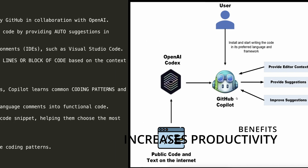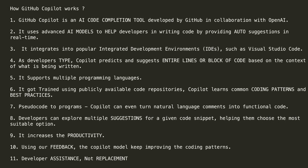These are important points. GitHub Copilot has some key points. It is an AI code completion tool. If you apply this, you can move to GitHub and OpenAI collaboration. You can use the AI model to help developers.